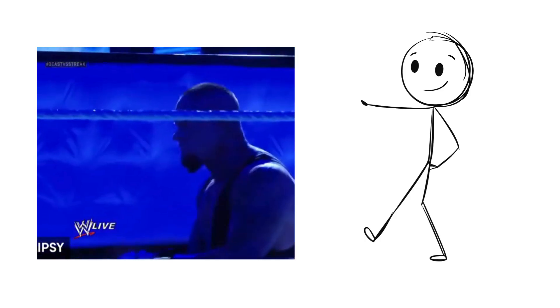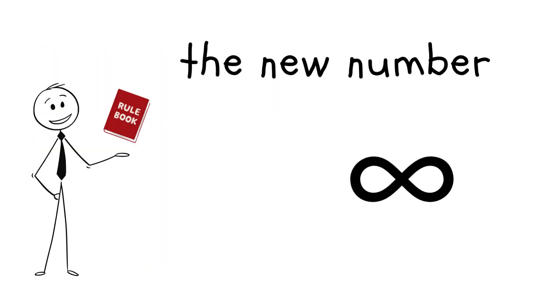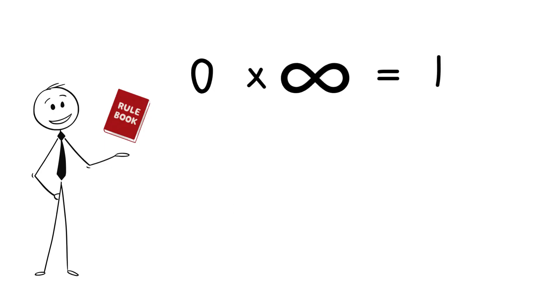But what if we just invented an answer? Let's say we make a new rule. Let's call this new number infinity. One divided by zero equals infinity. If that's our new rule, then it must mean that zero times infinity equals one.